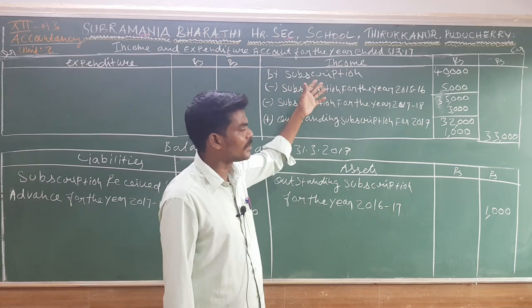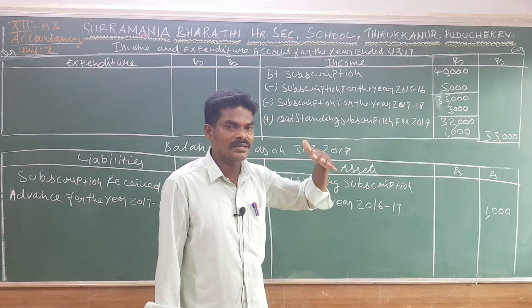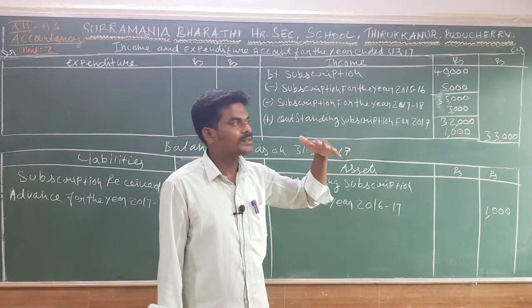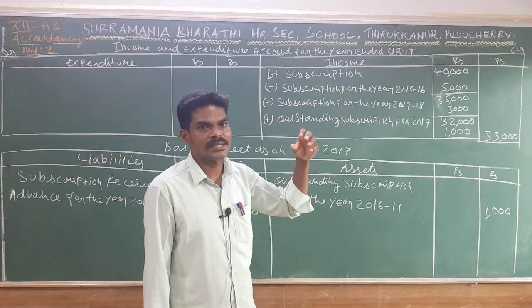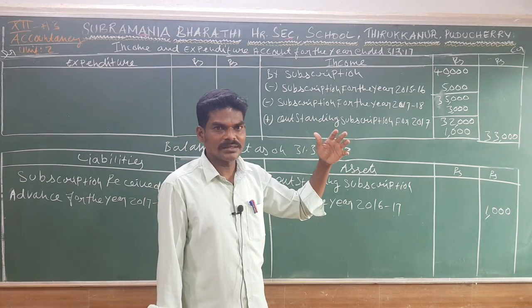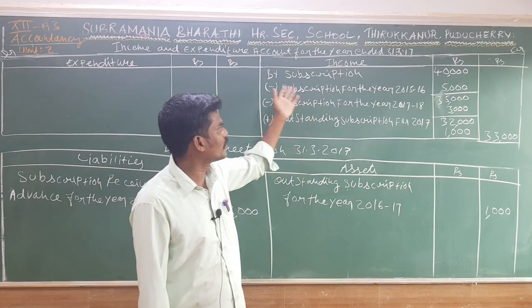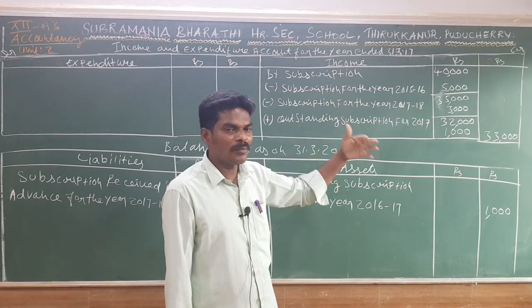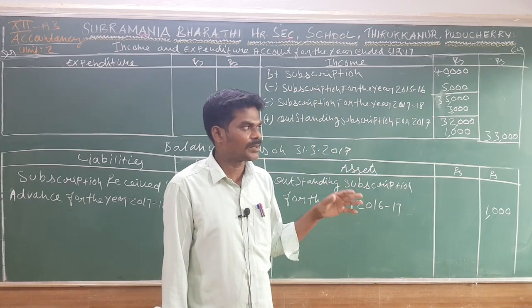From the income and expenditure account, the subscription of ₹33,000 will be obtained on the income side. If you look at the amount and the additions and deductions, the full calculation is explained.